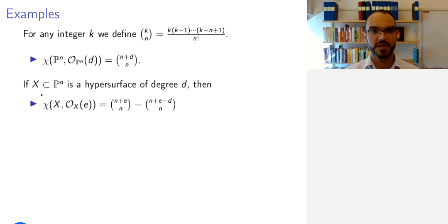More generally, if X is a hypersurface of degree d in projective n space, then the Euler characteristic of the twist by e of O_X is this difference. So remember that we got this by pulling back the twisting sheaf O_{P^n}(e) along the inclusion of X into P^n. So how do you prove this?